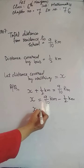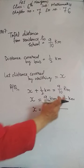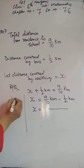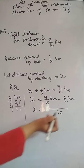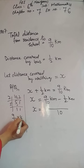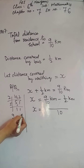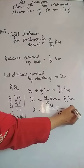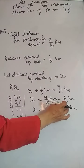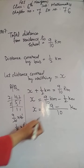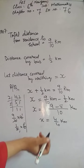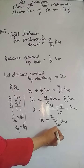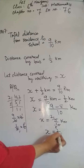Transpose karenge: x is equal to 9/10 minus 1/2. Denominator same nahi hai, toh LCM nikalenge. 10 aur 2 ka LCM: 2×5=10, toh LCM=10. Ab 9/10 into 10: 10÷10=1, 1×9=9. Minus 1/2 into 10: 10÷2=5, 5×1=5. X is equal to 9 minus 5 = 4, so 4/10 km. Cancellation hogi: 2×2=4, 2×5=10, toh x = 2/5 km. Usne walking mein jo distance cover ki woh hai 2/5 kilometer.